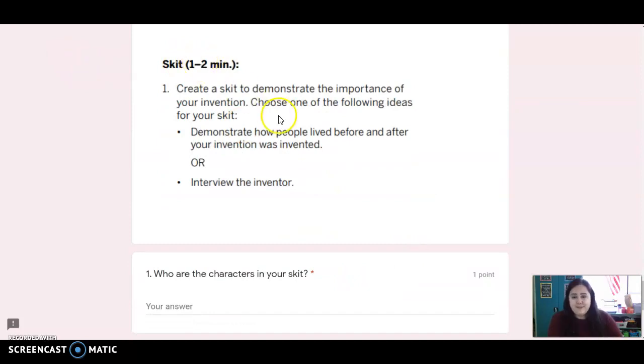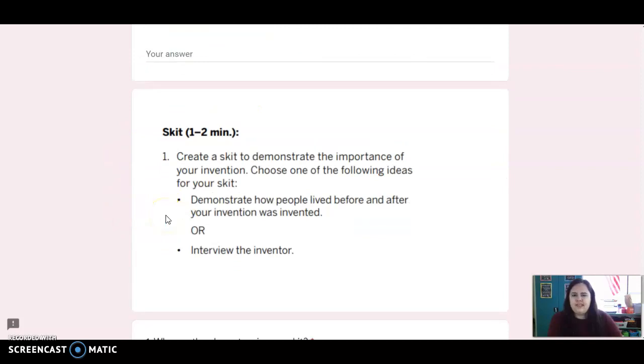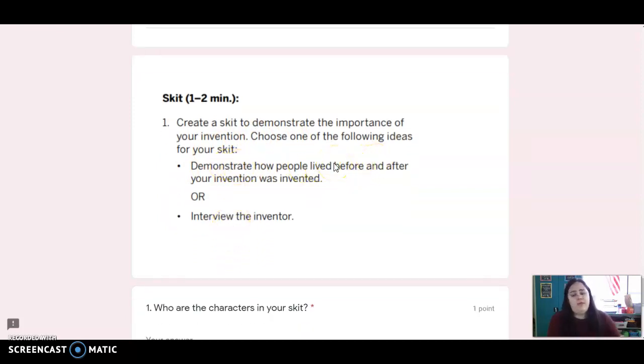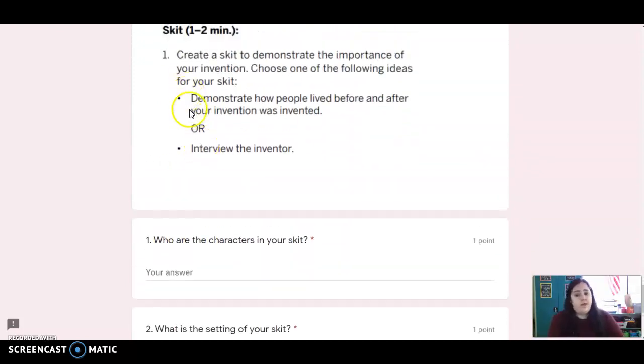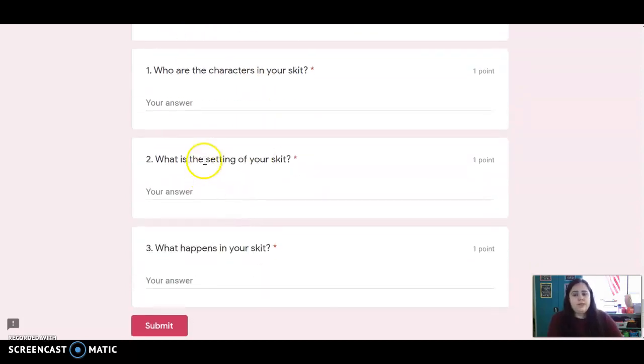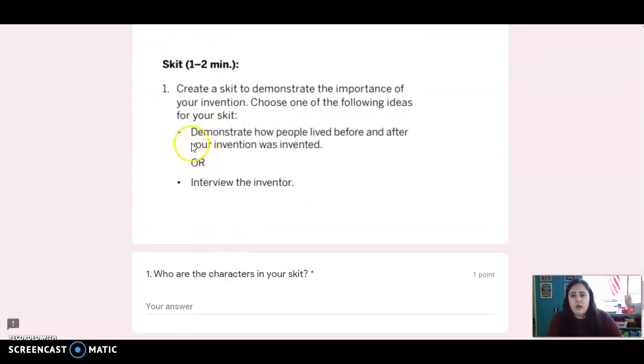Okay, now you're going to make a skit. So we have our slogan, you're going to make a skit kind of like a commercial for your product. You can choose one of these ideas: you can either show me how people lived before and after your invention was invented, or you can do a pretend interview with the inventor. So you're going to either make a skit showing how life was before the radio and how it is after the radio, or you're going to pretend to interview the inventor of the radio. Who are your characters? If you're doing a before and after, it might be a family, it might be a group of friends, it might be a class. If you're doing an interview, it's going to be you and the inventor. What is the setting? So where does it take place? And what is happening in your skit? So again, you're trying to show just how important this invention is. Think about what was life like before this was invented, and how is it better now.